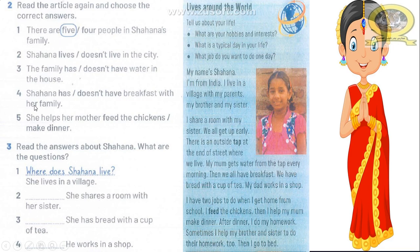Number four: Shahana has or doesn't have breakfast with her family. Shahana has breakfast with her family. As she said, 'We all have breakfast.' Number five: she helps her mother feed the chicken or make dinner. She said, 'I help my mom make dinner.'